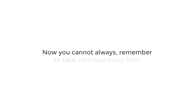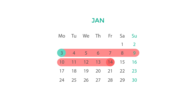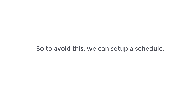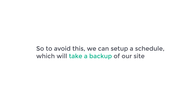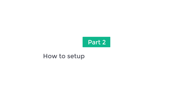Now you cannot always remember to take a backup every time. So let's say you take a backup today and after two weeks of working on your site your website crashes — you will lose all of the changes made during those two weeks. So to avoid this we can set up a schedule which will take a backup of our site at regular intervals. By doing this, our site's content will always be backed up without having to backup manually. So let's go to part two of this tutorial, where we see how to set up an automatic backup.